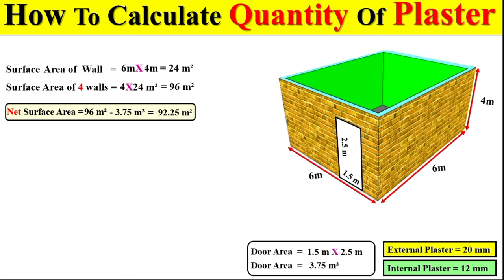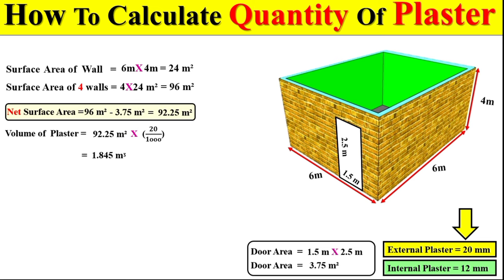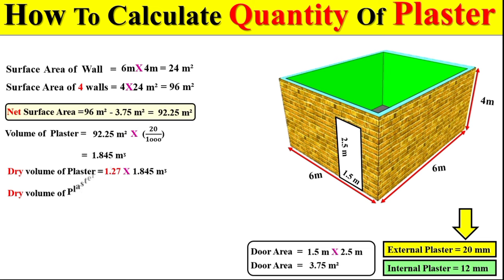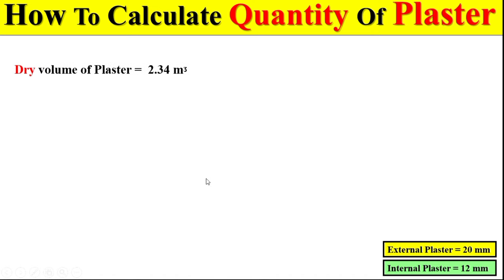We can now easily calculate the total quantity of external plaster. We multiply by 1.27 to convert the wet volume to the total dry volume of the external plaster in cubic meters. If the total dry volume of the external plaster is 2.34 cubic meters, we use a mix ratio of 1:4 for cement and sand.